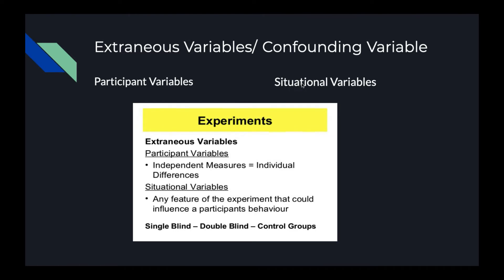Extraneous variables are any variable other than the DV and the IV. They can affect all levels of the IV, or they can systematically affect one level of the IV. Extraneous variables are basically participant variables or situational variables. When an extraneous variable causes changes in the DV, it then becomes a confounding variable.